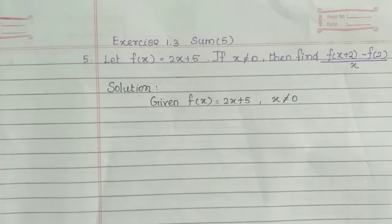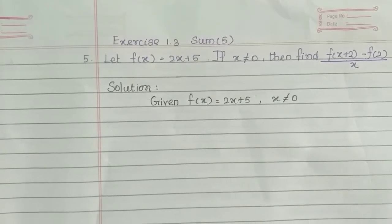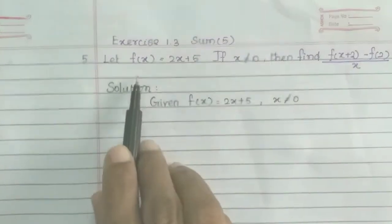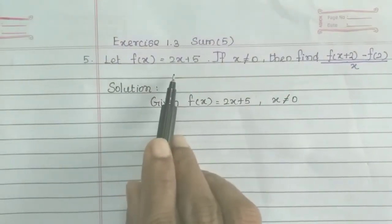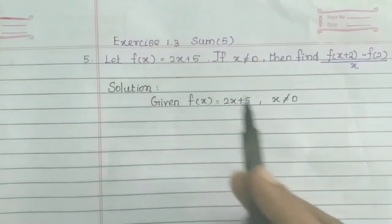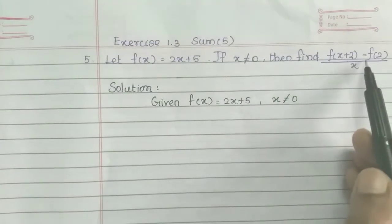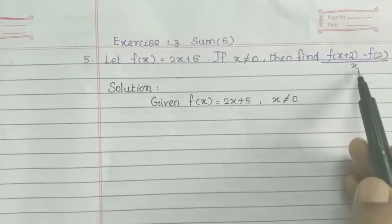So if you have a function f of x, then we need to find f of x plus 2 minus f of 2, divided by x.